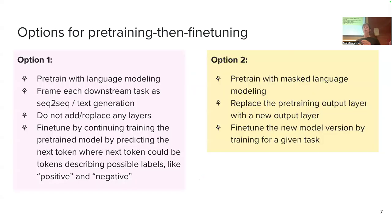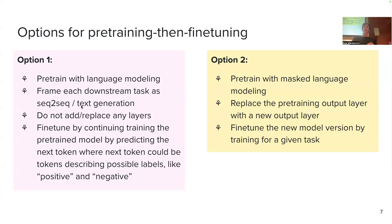Now let's go into these two options for the pre-training then fine-tuning paradigm. We are going to start with the one more commonly used today. I'm choosing this one first because it's closer to what you know right now, since we already introduced language modeling. The difference between the two options will be what training objective we use for pre-training. At fine-tuning, with one option you will literally not change the model, and with the other option you will need to do one extra tweak of your model before you continue with supervised fine-tuning.